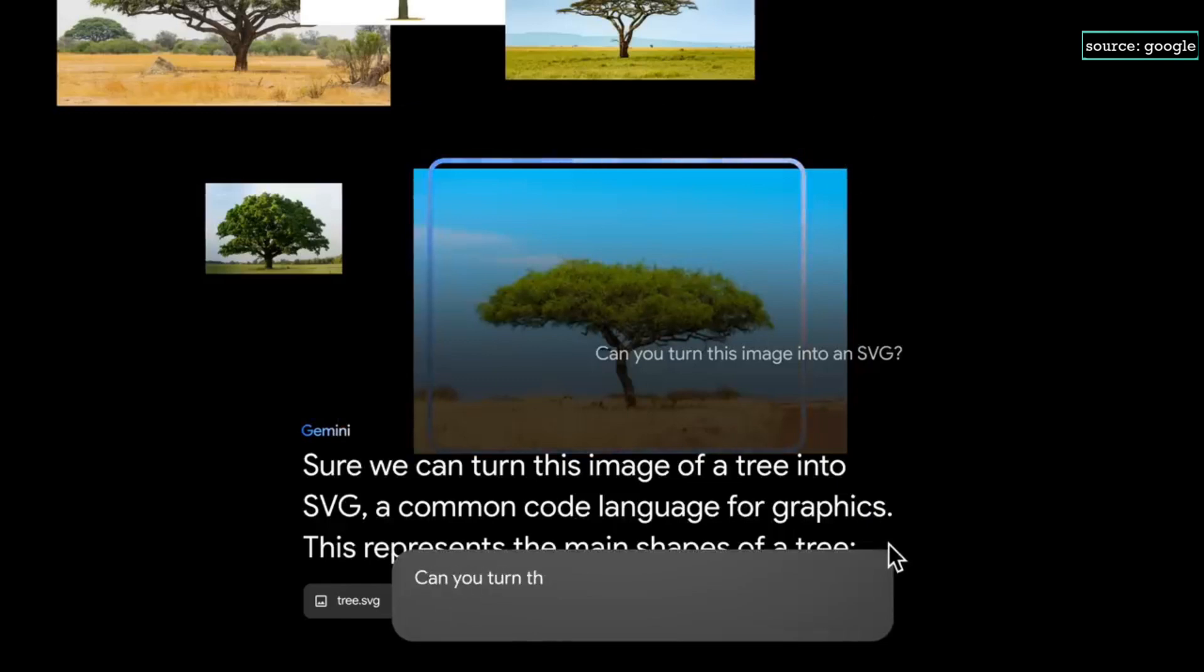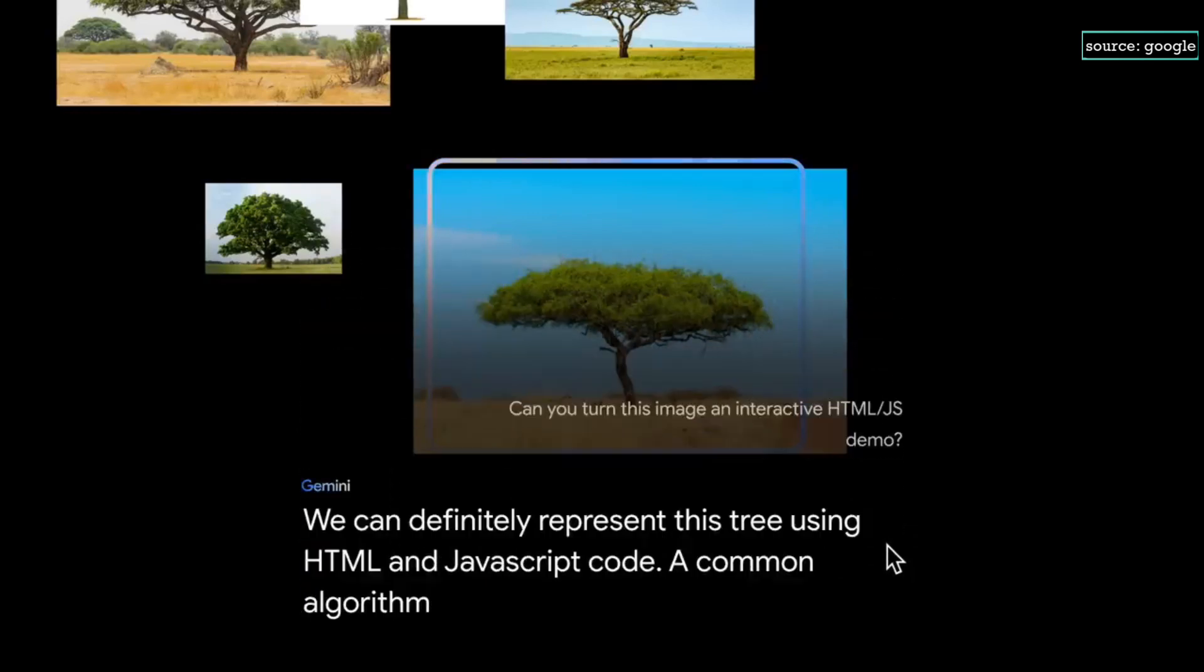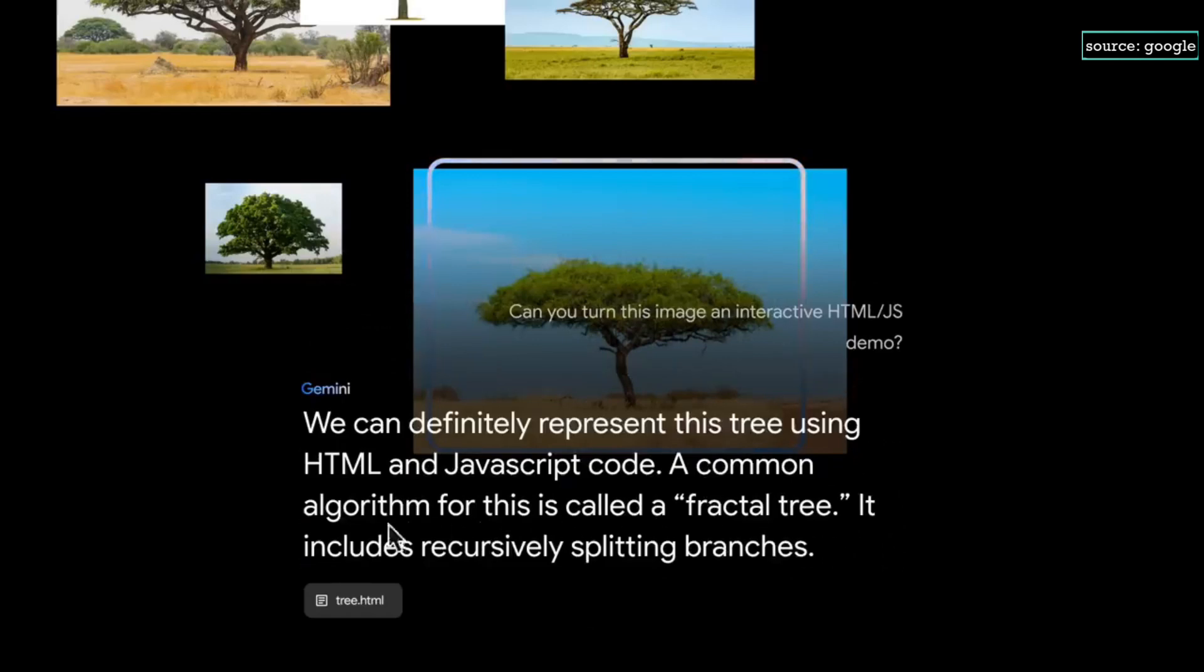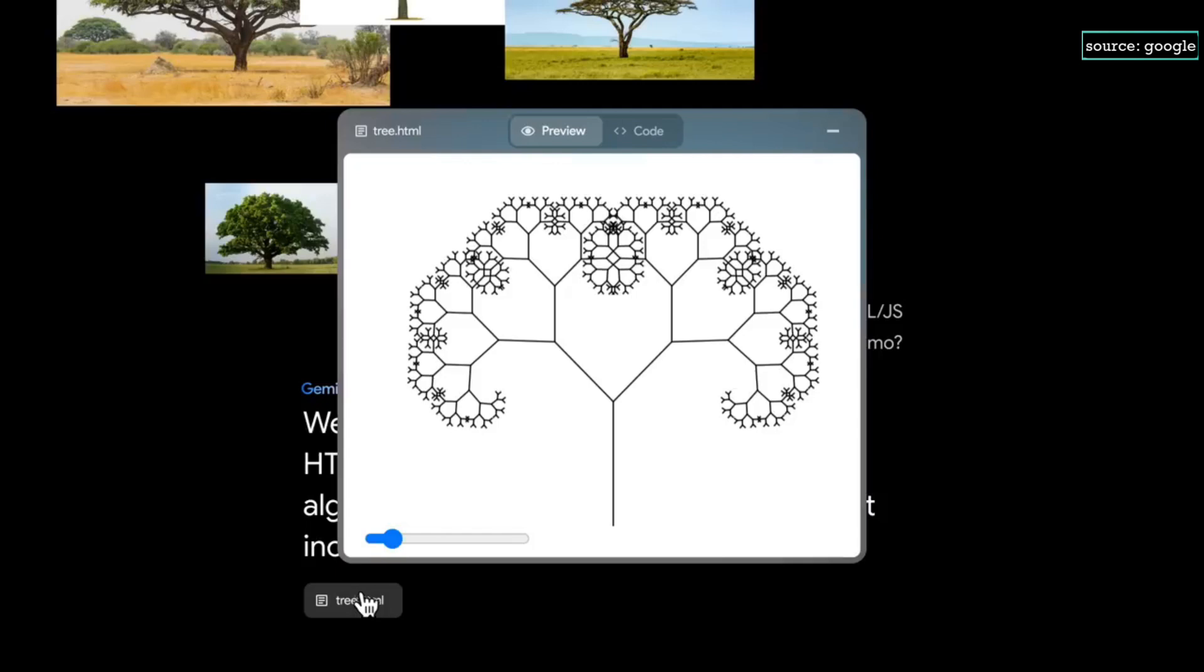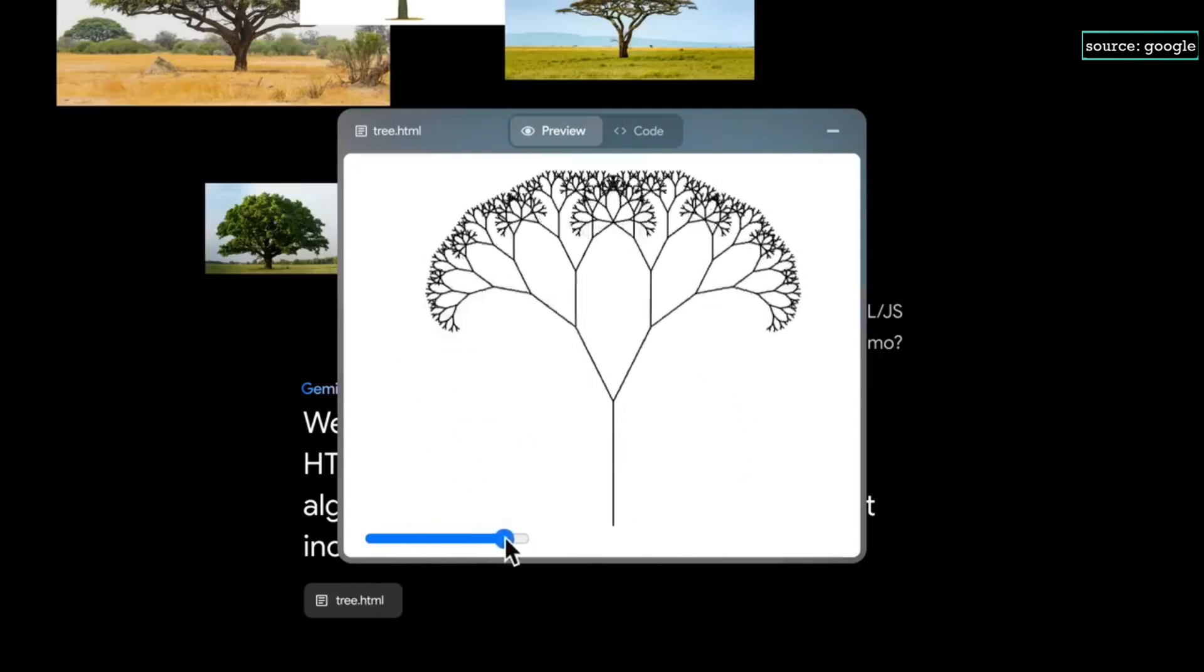Alright, now I want to try a more difficult test. Let's see if Gemini can make an interactive demo in JavaScript. Okay, here we go. A common algorithm for this is called a fractal tree. Okay, this is pretty cool. Gemini even provided a slider, so I can change and move the fractals.